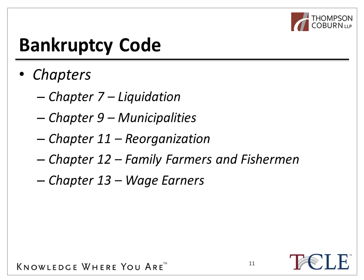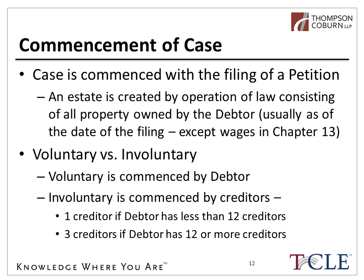Those are the primary chapters a debtor can avail themselves of under the bankruptcy code. A bankruptcy case is commenced by the filing of a petition under a particular chapter with the bankruptcy court. The filing of a petition is a pivotal event — various rights and remedies flow from the date of filing. Certain relief is afforded immediately upon filing, including the automatic stay, which is a prohibition against collection activity.